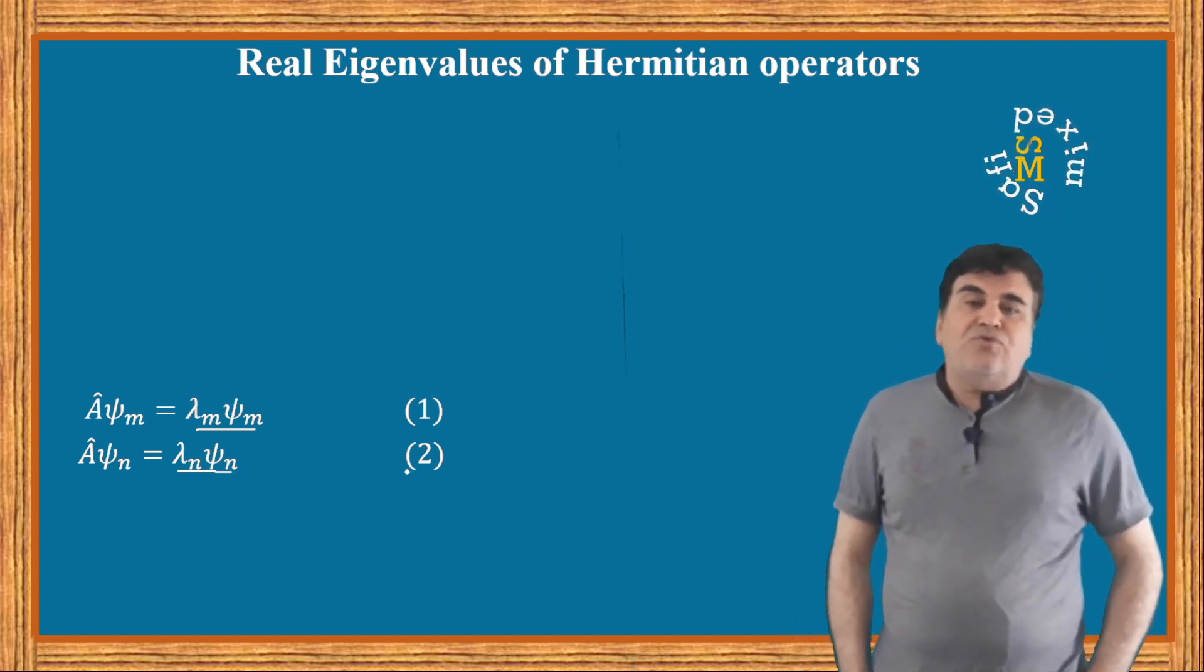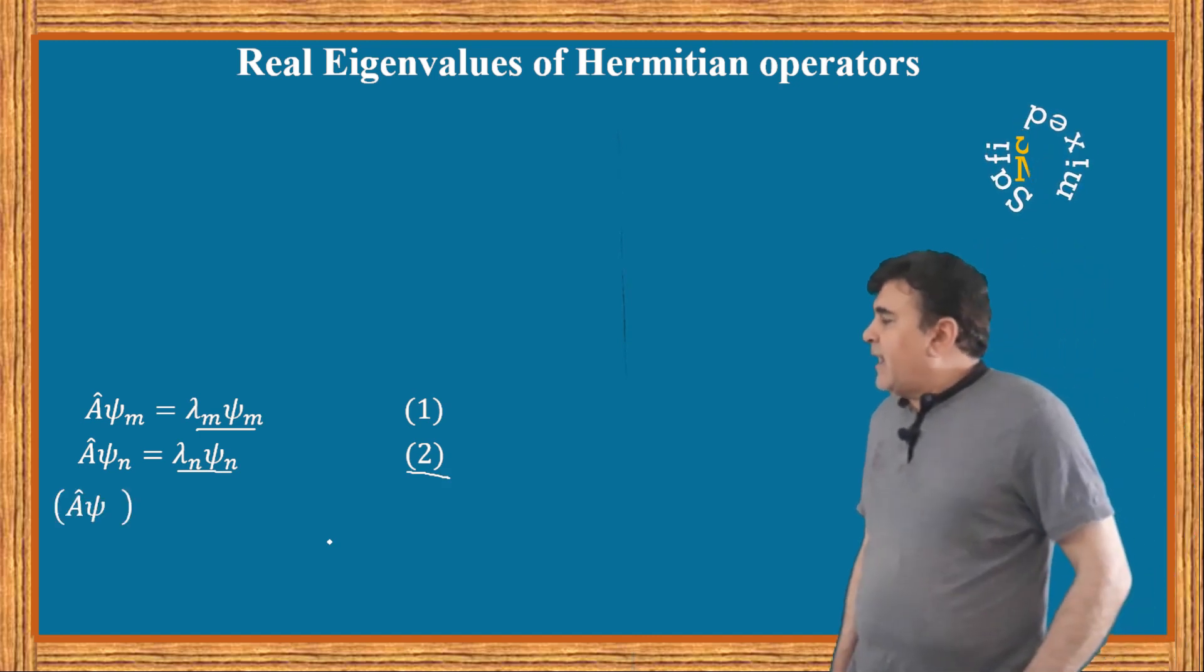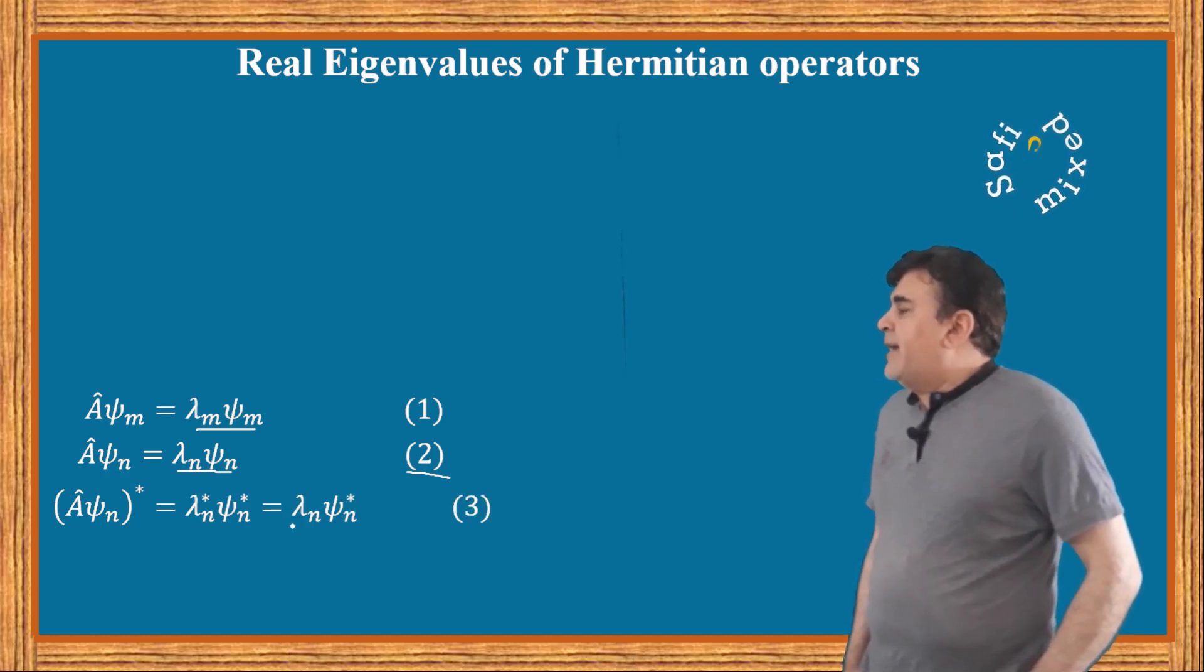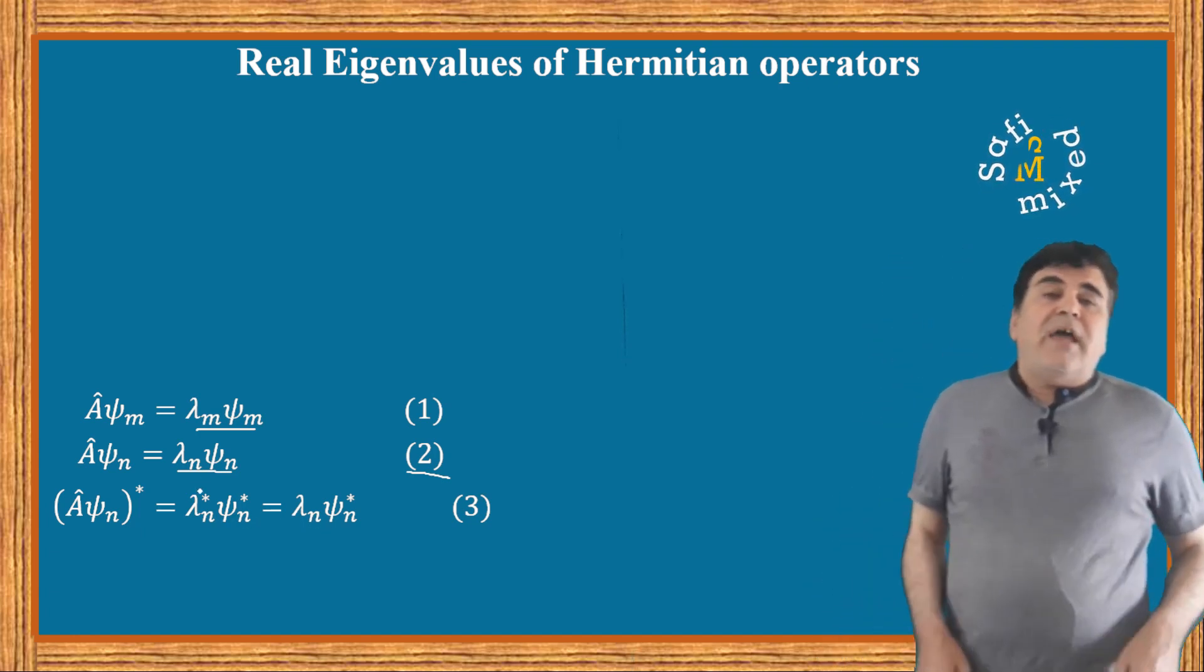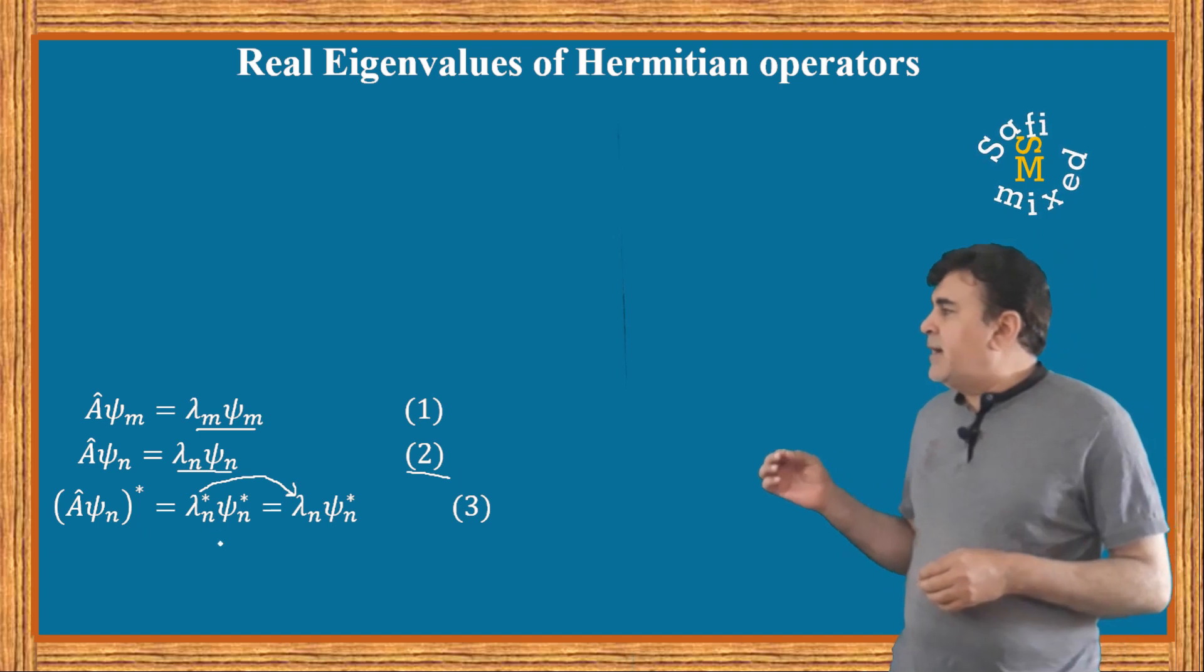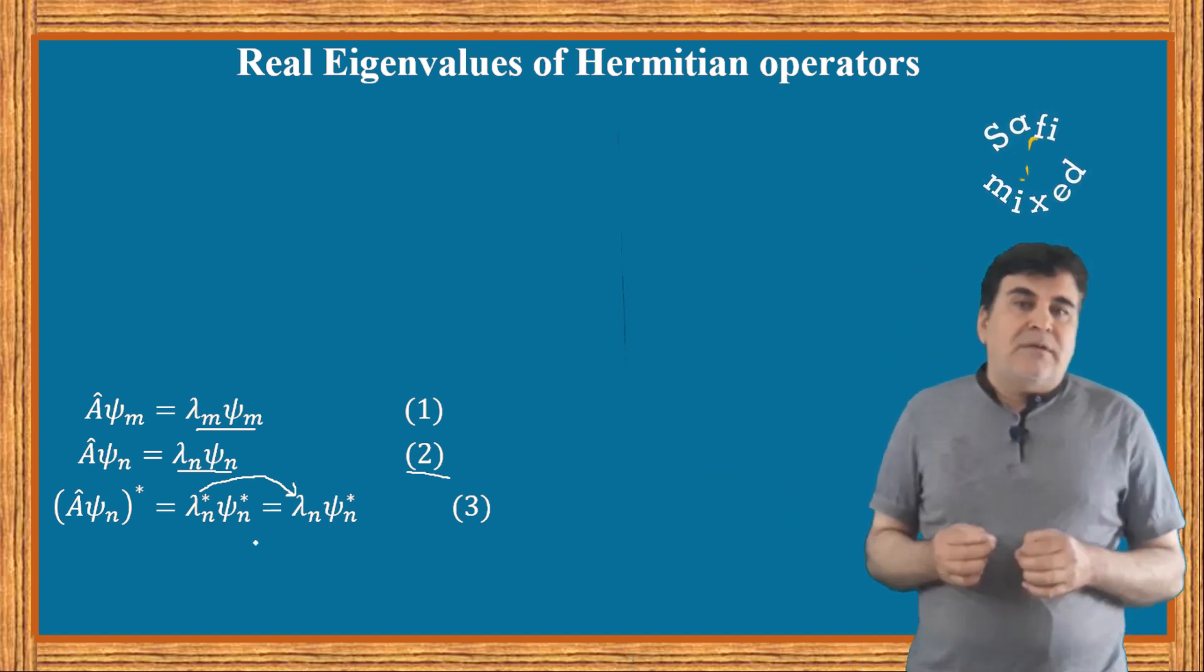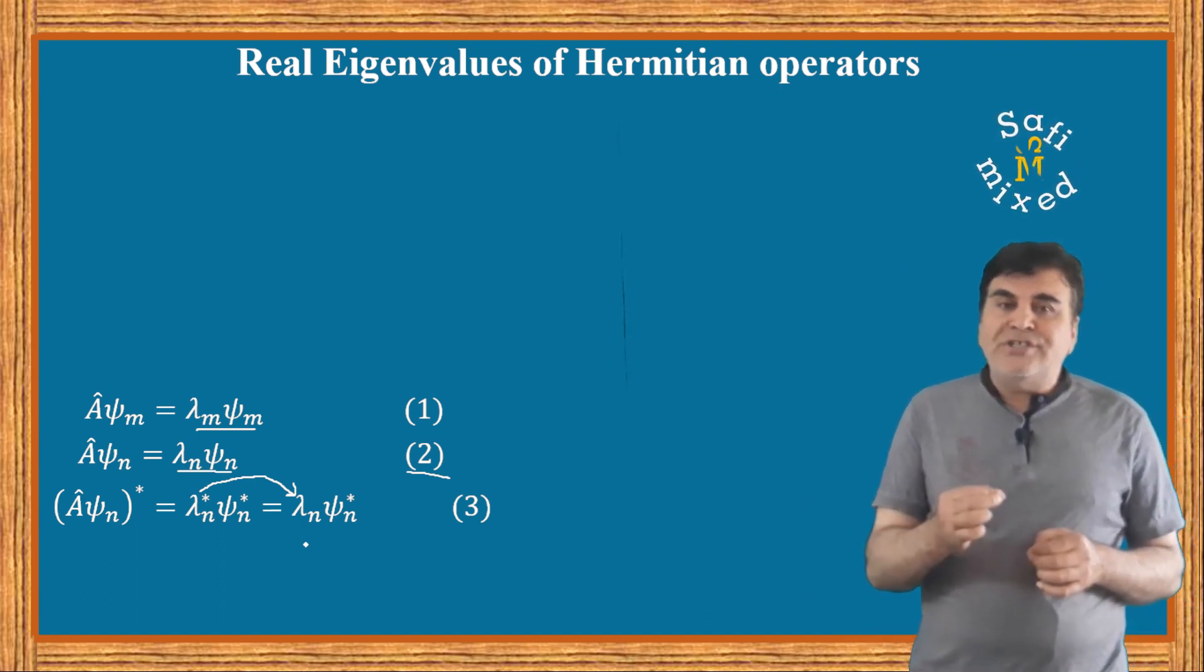Now taking the complex conjugate of equation 2, we can write it as the complex conjugate of A applied to ψ_n equals λ_n* ψ_n*, where I have used the fact that eigenvalues of Hermitian operators are real and have set λ_n* equal to λ_n. For the proof of this property of eigenvalues, do watch my video on real eigenvalues of Hermitian operators.